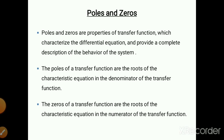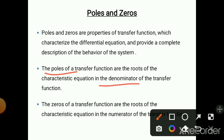So what are poles? The poles of a transfer function are the roots of the characteristic equation in the denominator of the transfer function. The transfer function has both a numerator and denominator; if we take the roots of the denominator part, that gives us the poles. And what are zeros? The zeros of a transfer function are the roots of the characteristic equation in the numerator. So poles are related to denominator roots and zeros are related to roots of the numerator equation.